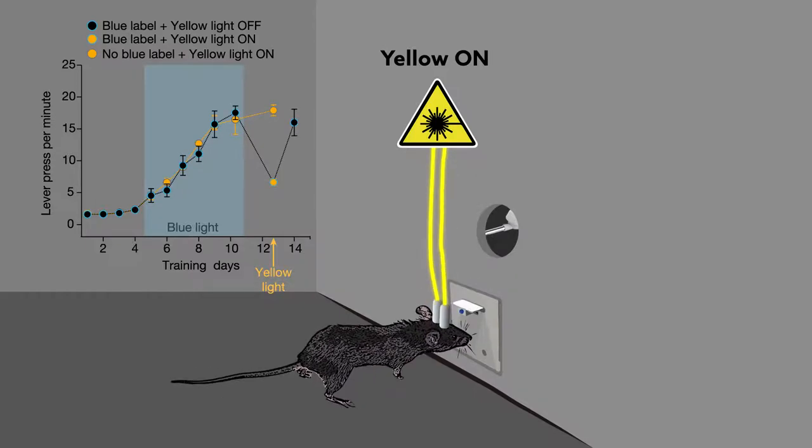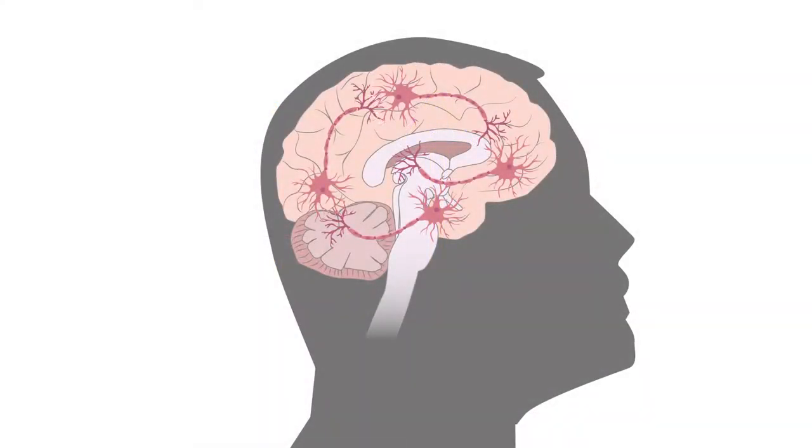This confirmed that the neurons marked with CalLite were responsible for lever-pressing. By labeling neurons that control specific actions and providing a means of controlling them,